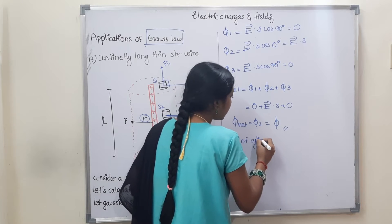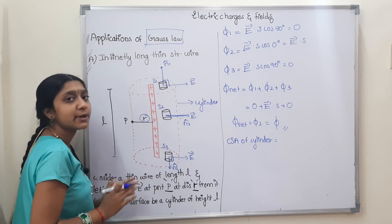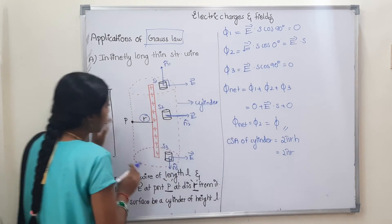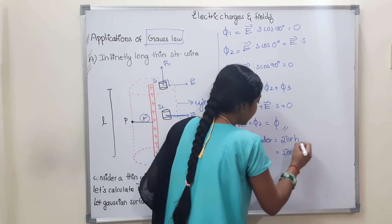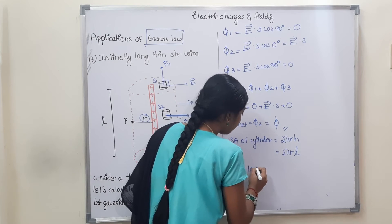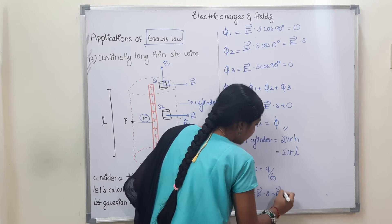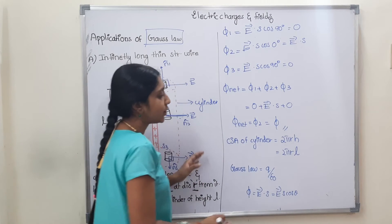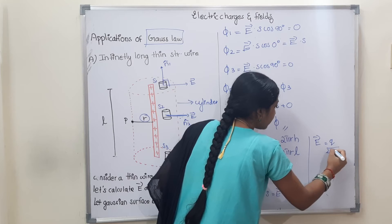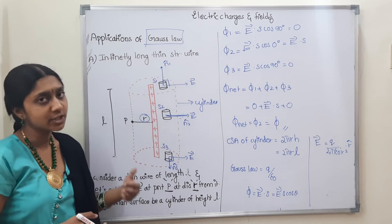Only the curved surface contributes to the flux. The area of the curved surface of the cylinder is 2πrL, where L is the length. Now, according to Gauss's law, the total flux Φ equals Q divided by ε₀. The electric field formula is Q divided by 4π ε₀ R².